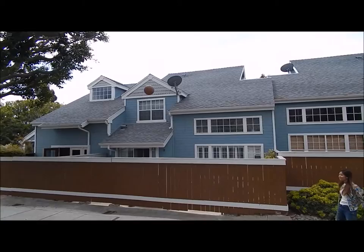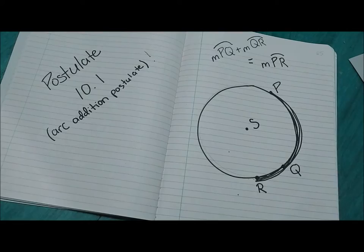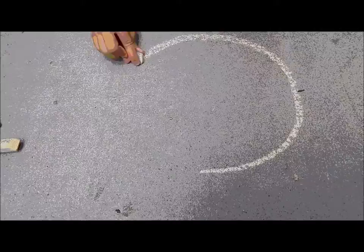Next here comes a question — it's the arc addition postulate. You add measures of adjacent arcs, and the sum is the measure of those two arcs combined.